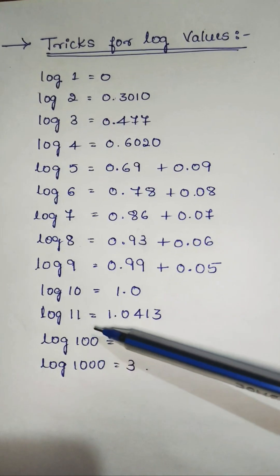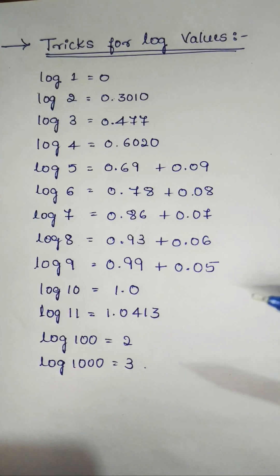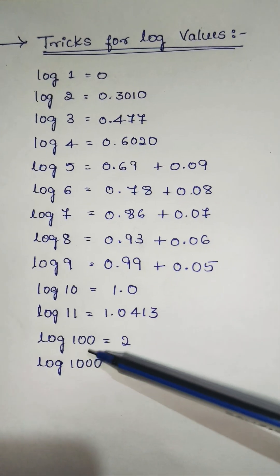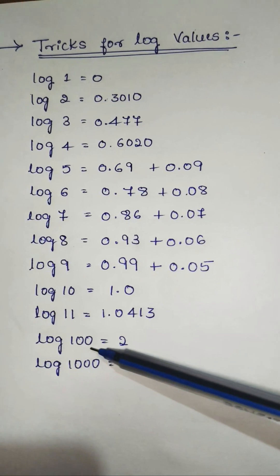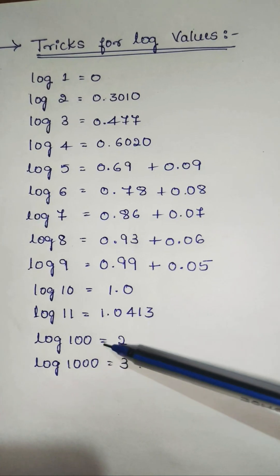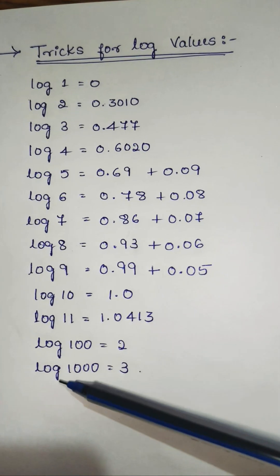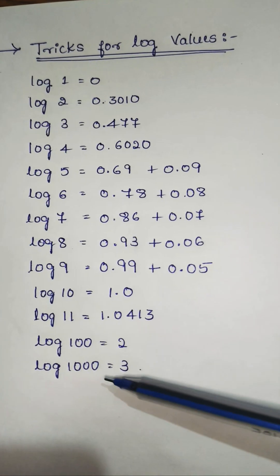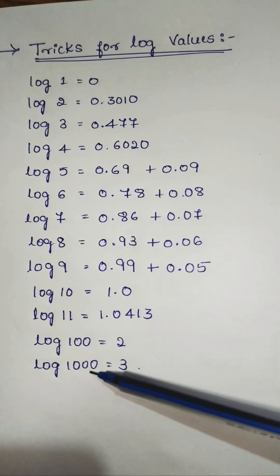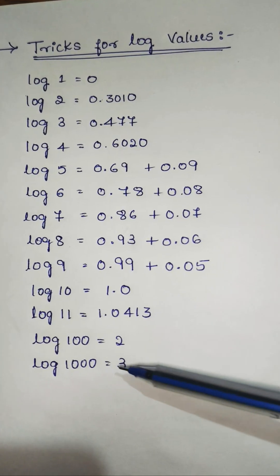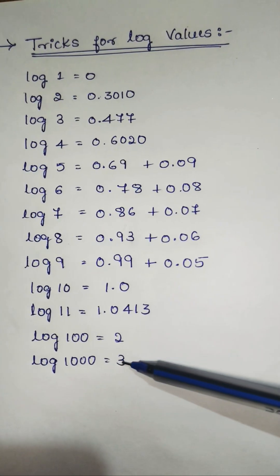Also remember that log 11 is equal to 1.0413. Log 100 is equal to 2 — here there are two zeros, so you can write log 100 equal to 2. And log 1000 is equal to 3 — here there are three zeros, so you can write directly that log 1000 is equal to 3.